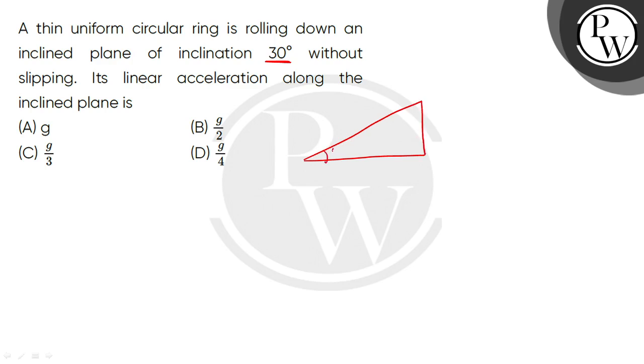Angle of inclination is 30 degrees. Now, when a body rolls down along the inclined plane, our acceleration is given by g sin theta over 1 plus k square divided by r square. What will the moment of inertia of the ring be?